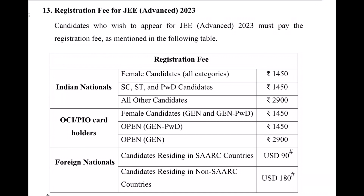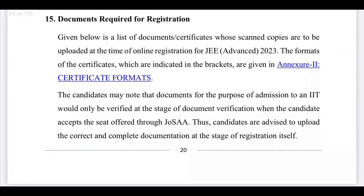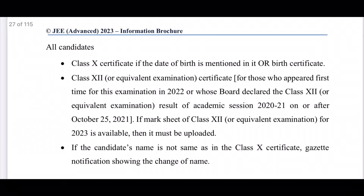If you want to upload documents for registration, you can upload them in the required formats. Apart from your mark list, if you have category certificates like OBC NCL, SC, ST, EWS, or PWD documents, you can upload them in the specified format. The first document required is the Class 10th Certificate, which serves as date of birth proof. If you have a birth certificate, you can upload that as well.